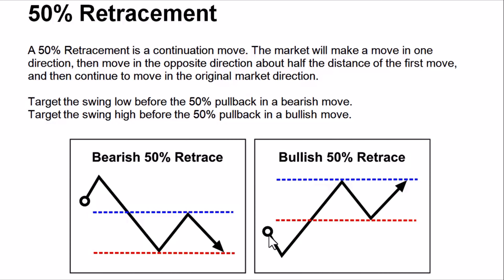Now for the bullish move: the market comes from downward upward, hits a resistance area, drops down from its support thereby covering 50% of the original upward move, then continues towards its upward direction. I'll show you this on an actual chart so you know how to use it.